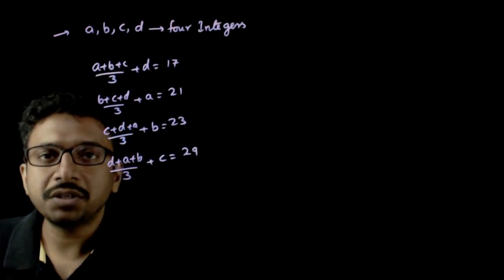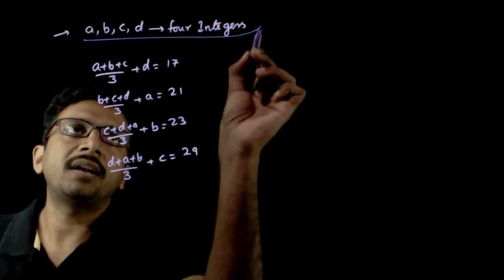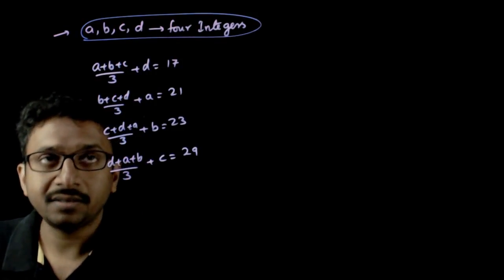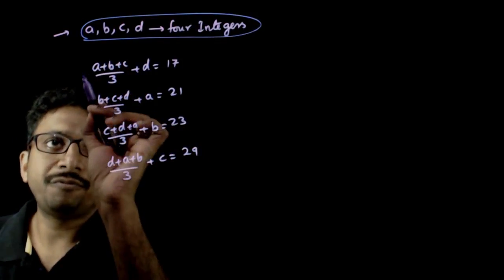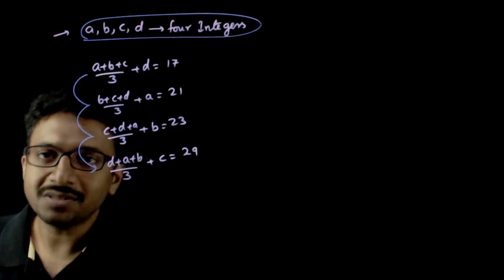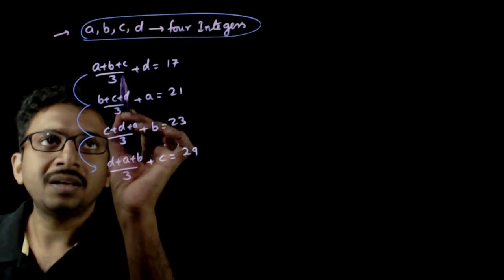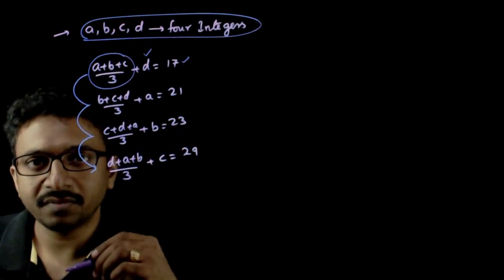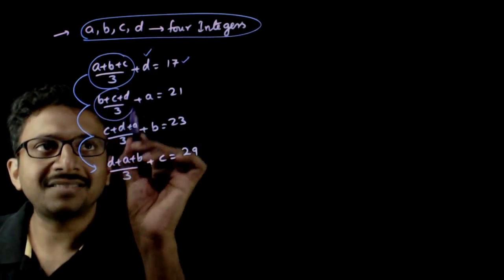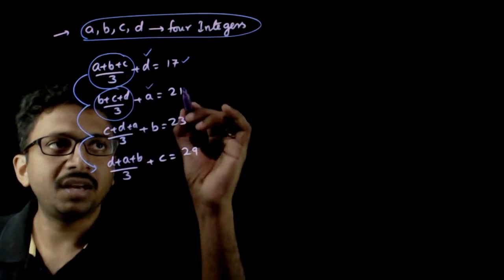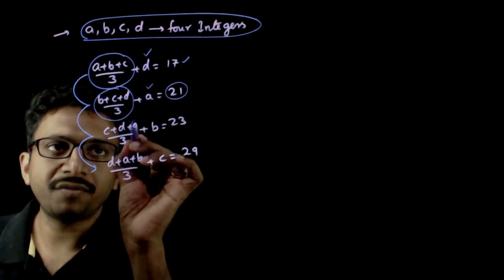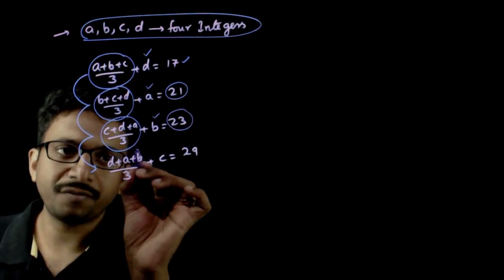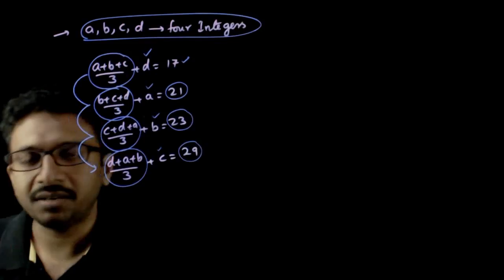Welcome students. In this question you are given that a, b, c, d are four integers and you are given four pieces of information. The average of the first three numbers plus the other number is equal to 17. The average of the next three numbers plus the other number is equal to 21. The average of another three numbers plus the remaining number is 23, and the average of the other three numbers plus the remaining number is equal to 29.